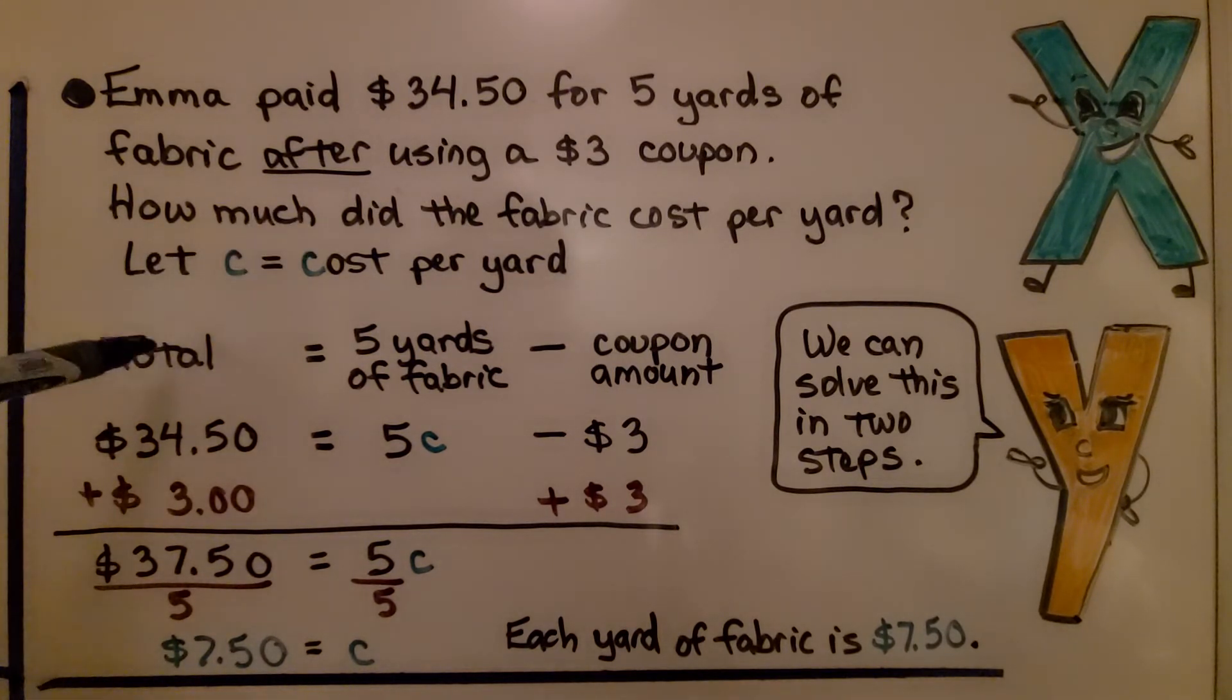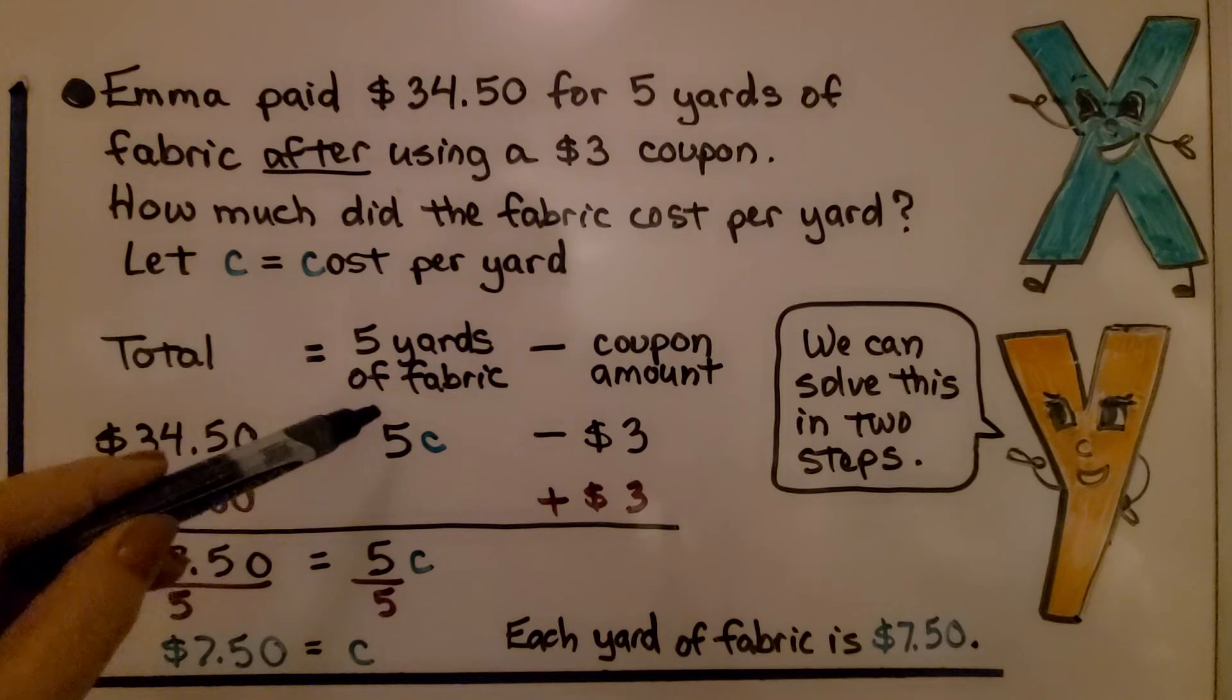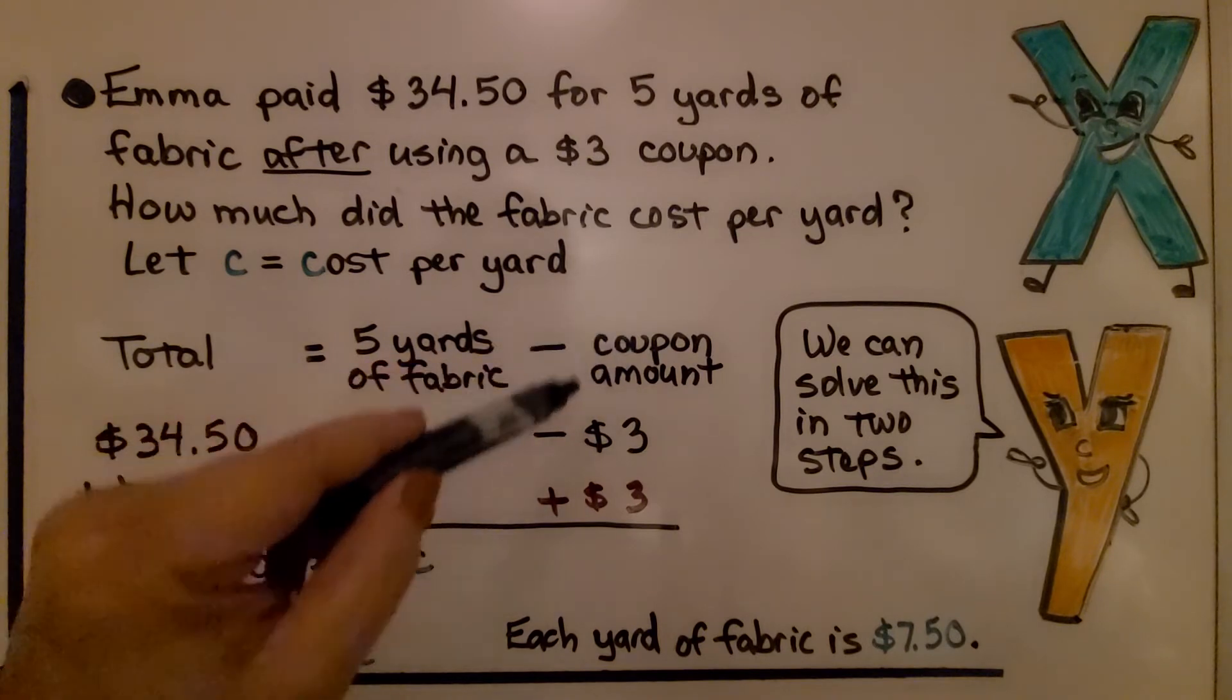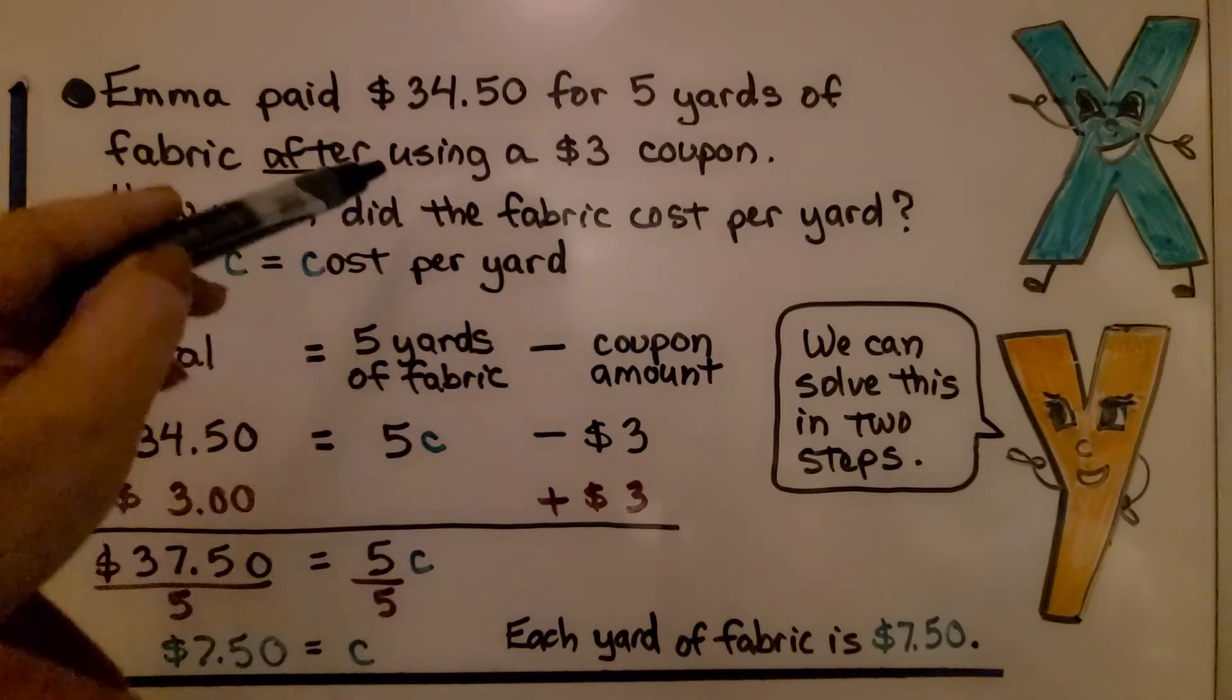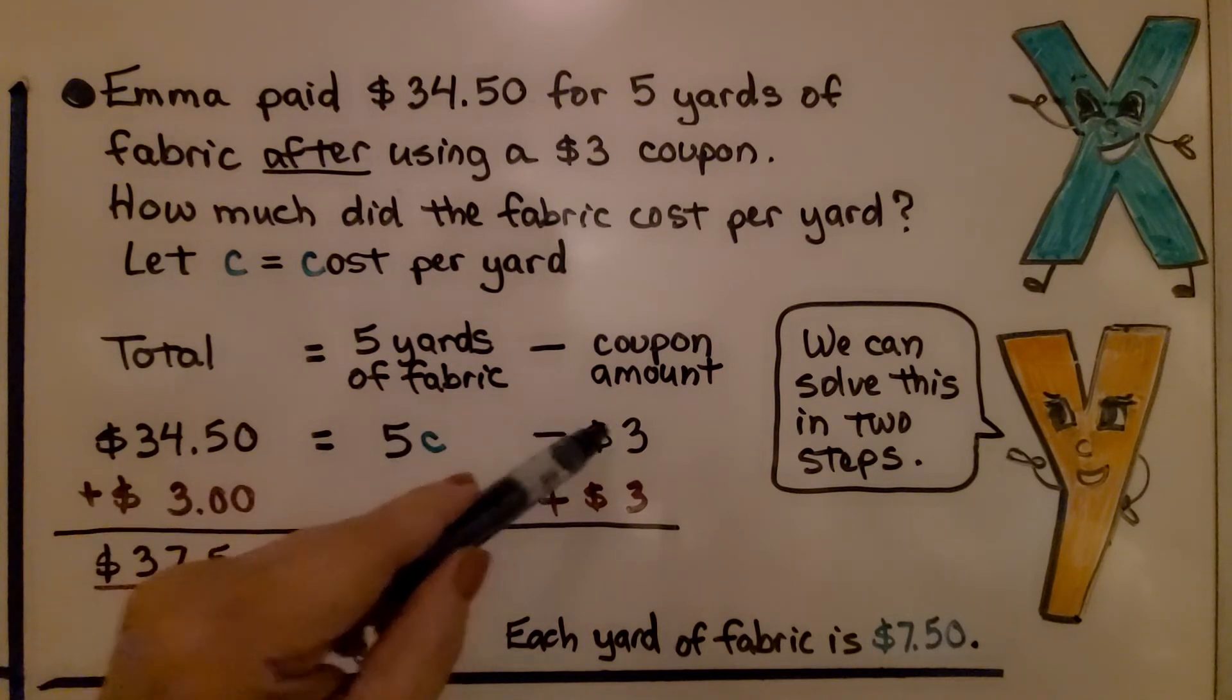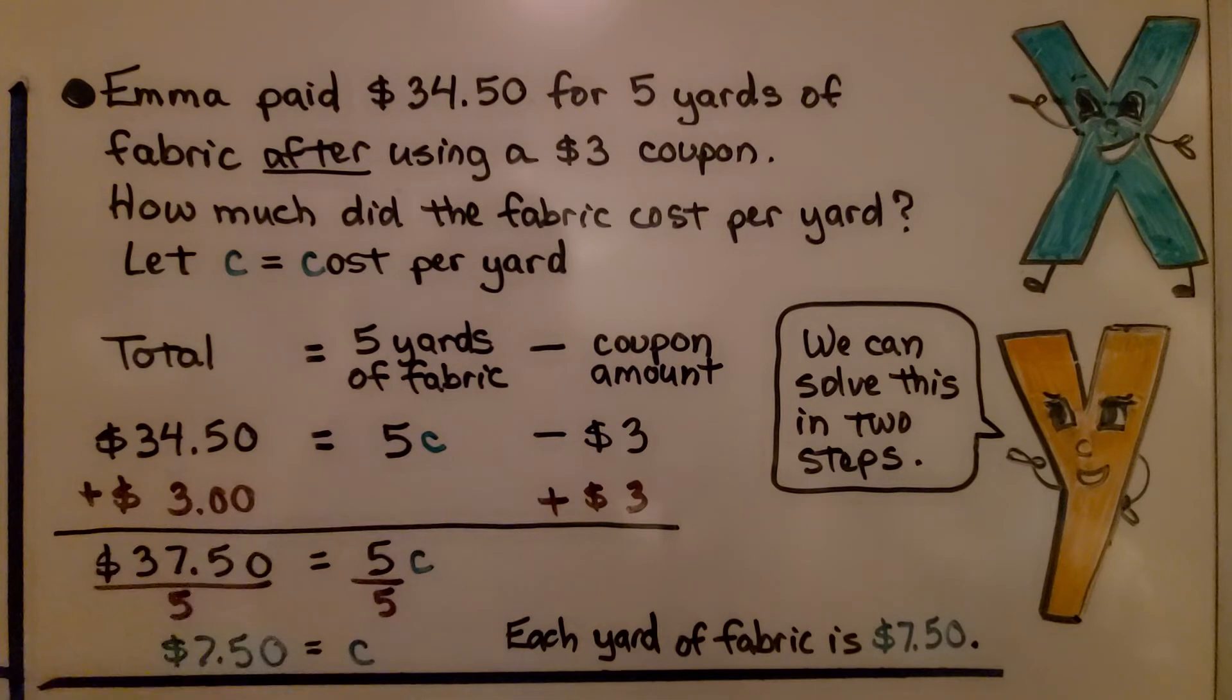So we have our total. It's $34.50. And it equals 5 yards of fabric. So we have 5 times C, the cost of the yards. And we need to subtract the coupon amount. This is after she used the coupon. So we're going to do minus $3. When we use a coupon, we're taking off money. So we can solve this in two steps.